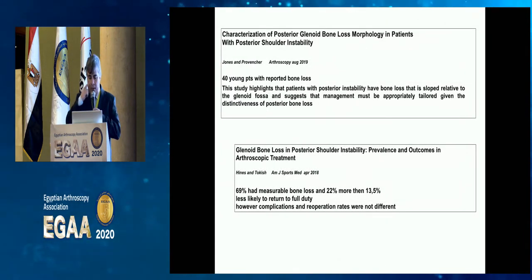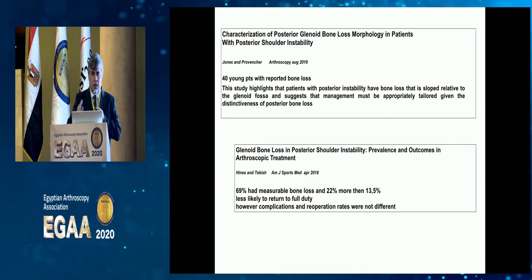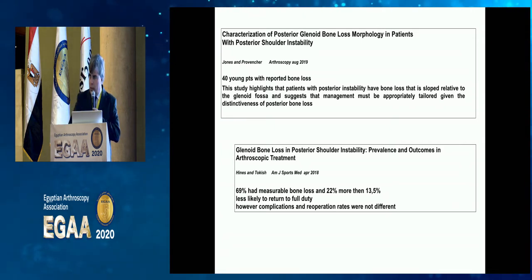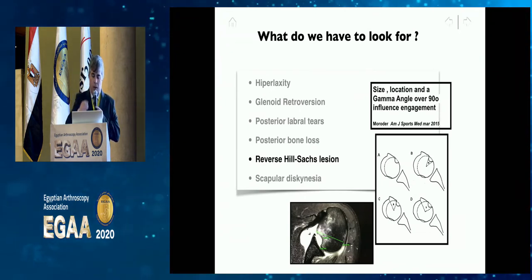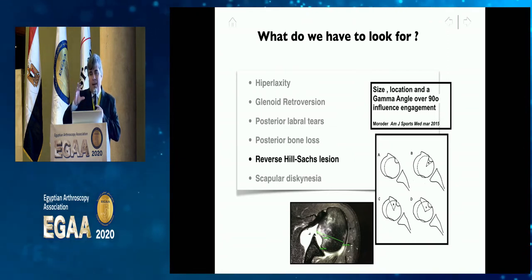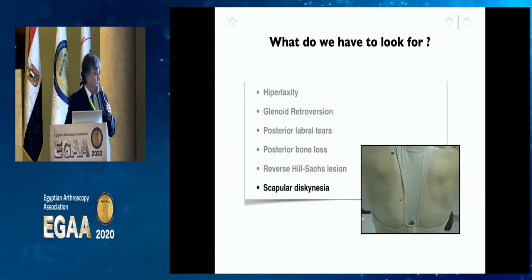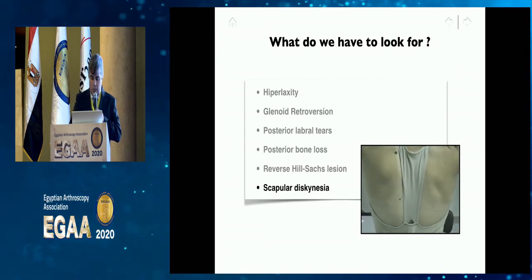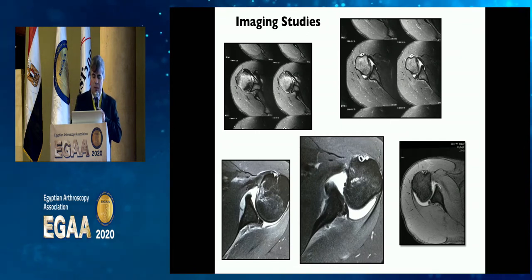Recent articles by Matt Provencher and John Tokish published in Arthroscopy and AJSM show there are more glenoid alterations posteriorly caused by instability, leading to bone attenuation and labral tear attenuation. The reverse Hill-Sachs lesion is also important — Philippe Moroder described the gamma angle as an analogy to the glenoid track concept, showing that a larger reverse Hill-Sachs lesion can be connected to instability. Always look for scapular dyskinesia as it can be both a cause and a consequence of posterior shoulder instability.